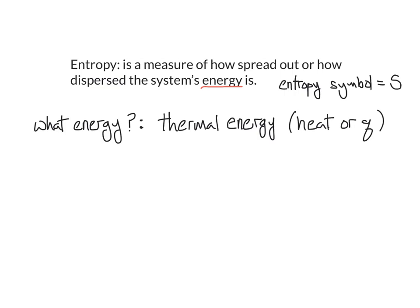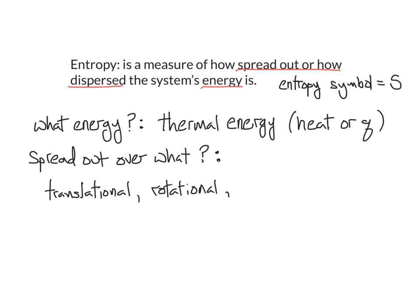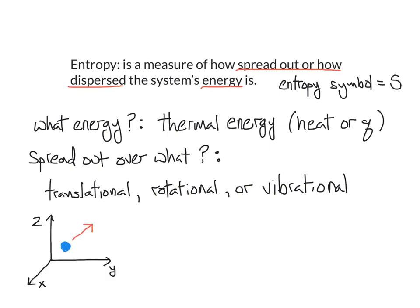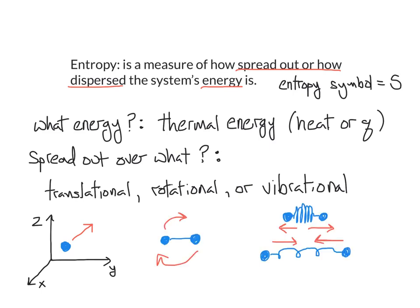What is this energy getting spread out over? This energy is getting spread out or partitioned into translational motion of the molecule, rotational motion of the molecule, or vibrational motion of the molecule. So entropy is actually a measure of how thermal energy is being put into translational motion, rotational motion, or vibrational motion of molecules. Let's look at more details of the translational, rotational, and vibrational entropy.